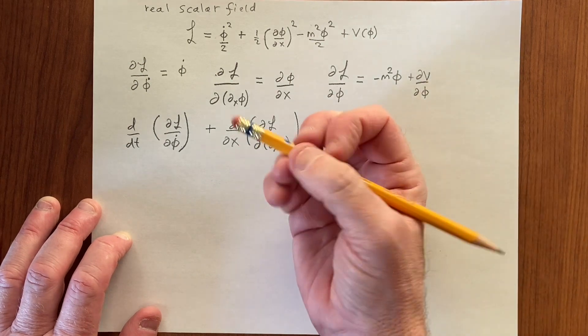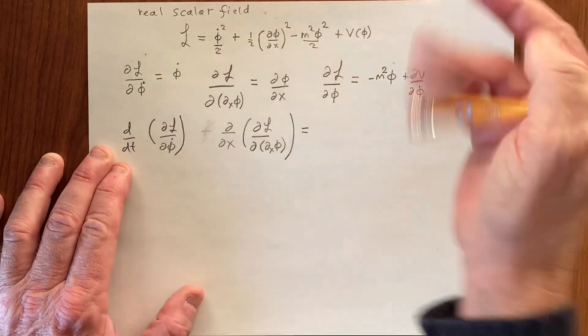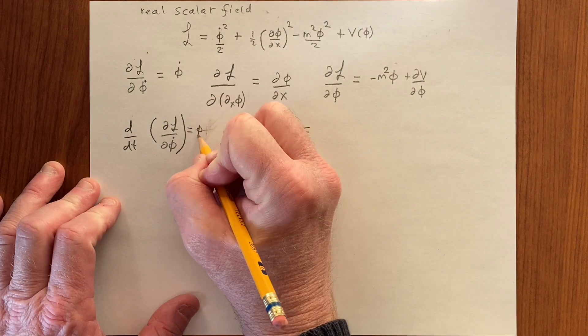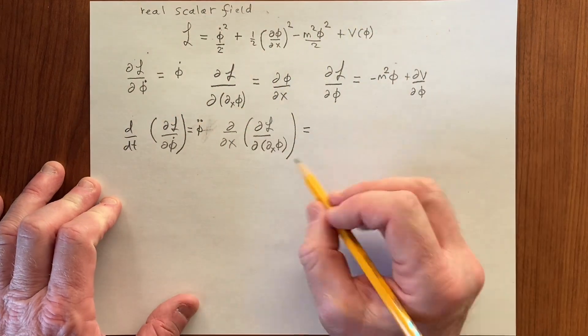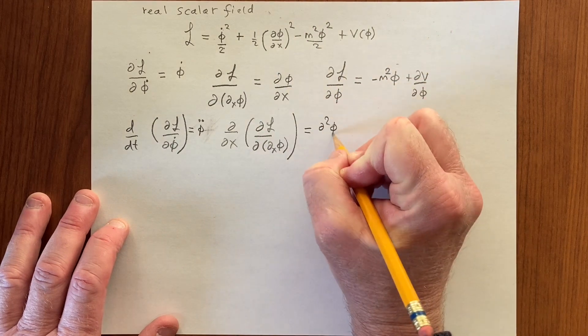Sorry, what am I doing here? I'm mixing things. d by dt, well, this gives us phi double dot, and then when we take the derivative of this, we're doing that, sorry. So we get that.